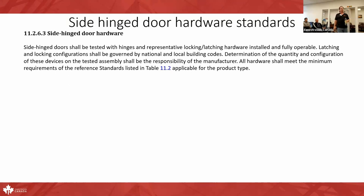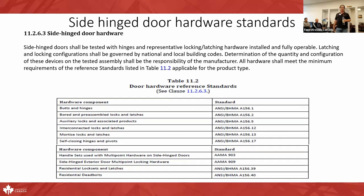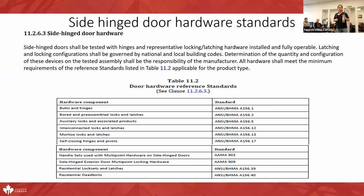Section 11.2.6.3, side-hinged door hardware: test with hinges and representative locking/latching hardware installed and fully operable. The latching and locking configuration shall be governed by national and local building codes, and determination of the quantity and configuration is the responsibility of the manufacturer. All hardware shall meet the minimum requirements of the reference standards listed in Table 11.2. There are a lot of hardware standards for doors that some people may not be aware of, and all components in a hinged door system referenced in that table must be backed up by compliance to those standards.